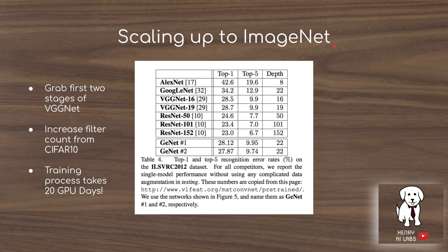The results of scaling architectures found on CIFAR-10 to ImageNet are also shown. Since training on ImageNet for every evaluation is infeasible — it takes 20 GPU days to train to convergence — they instead take the first two stages of VGGNet to handle the 224x224 ImageNet input and downsample it to the desired input size for their discovered network, while increasing filter counts to something like 256, 512, and 512.